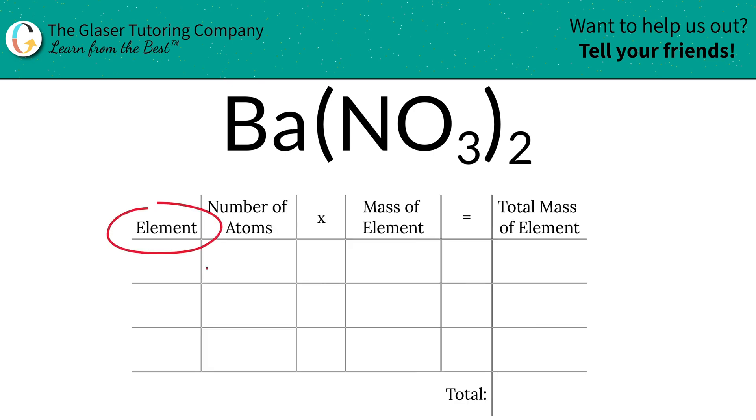The first thing I'm going to do is write the elements I see in the compound. So I see barium, Ba, I see nitrogen, N, and I see oxygen, O.